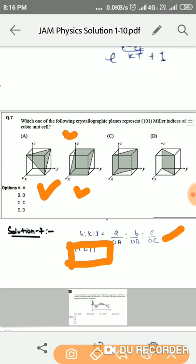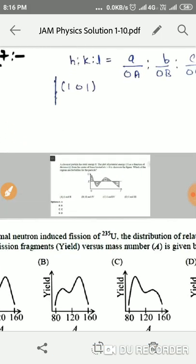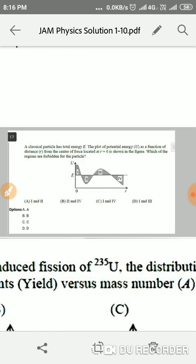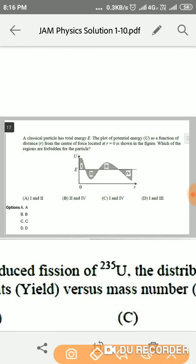Moving to the next question, we have a classical particle whose total energy is E and potential energy is U. The plot of potential energy versus r is given, and we have been asked which regions are forbidden. Since we know that in classical mechanics any particle cannot have a potential energy greater than total energy, in regions one and three the particle's potential energy is greater than its total energy, so regions one and three are forbidden. According to that, option D is the right answer.